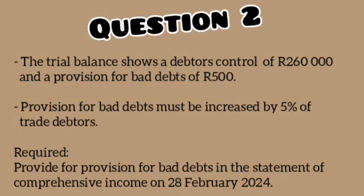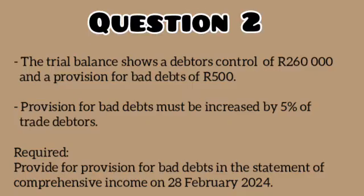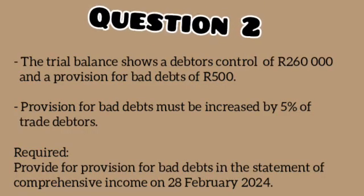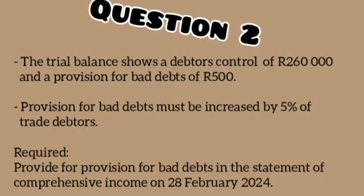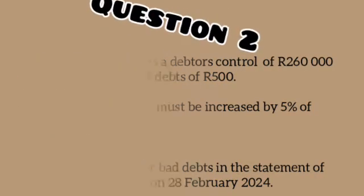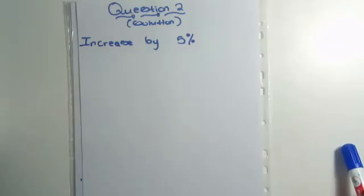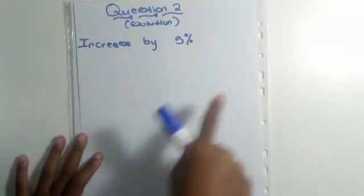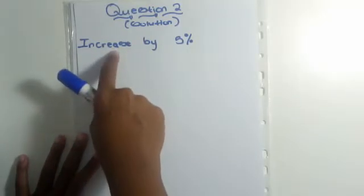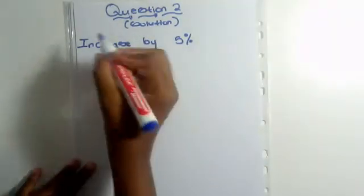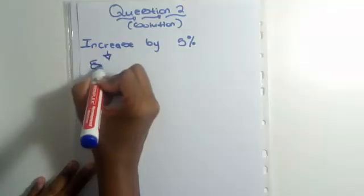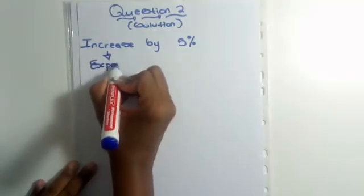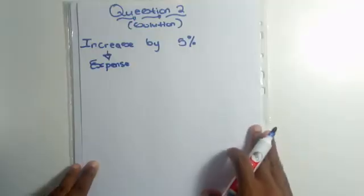The trial balance shows a debtors control of R260,000 and a provision for bad debts of R500. Provision for bad debts must be increased by 5% of trade debtors. Provide for the provision for bad debts adjustment in the Statement of Comprehensive Income on 28 February 2024. This question is different in that it tells you that you are increasing, so I already know this is an expense going straight to operating expenses.